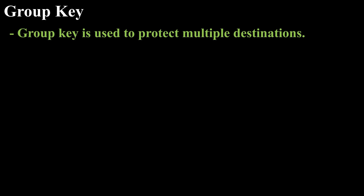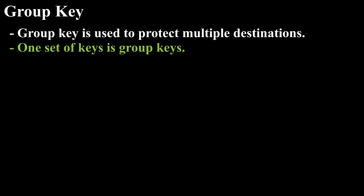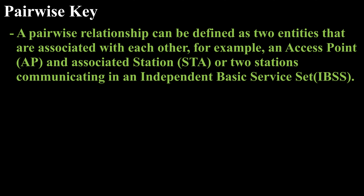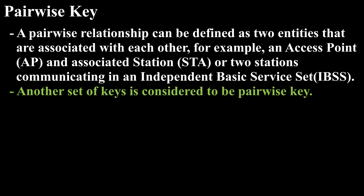Group Key is used to protect multiple destinations. One set of keys is Group Keys. A pairwise relationship can be defined as two entities associated with each other — for example, an access point and associated station, or two stations communicating in an independent basic service set. Another set of keys is considered to be Pairwise Keys.